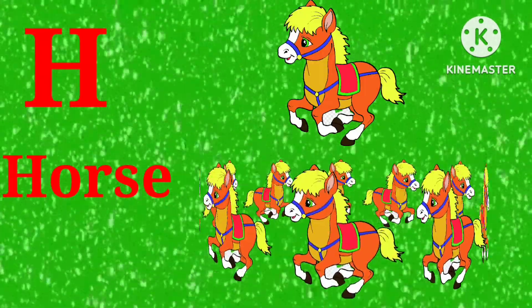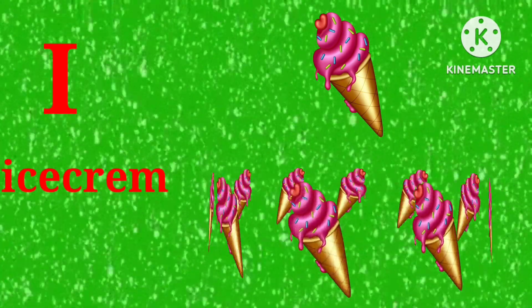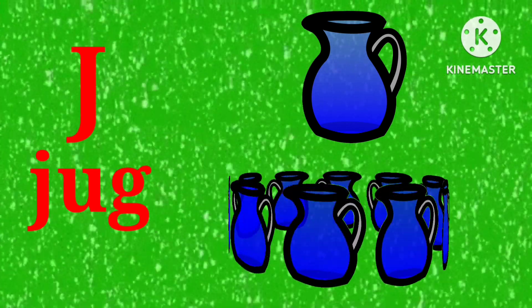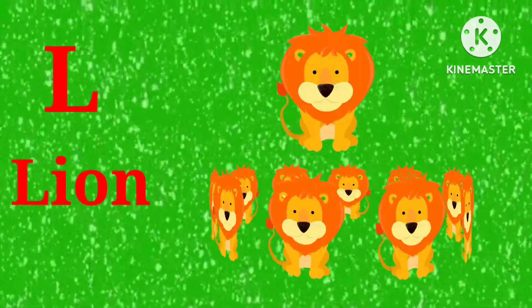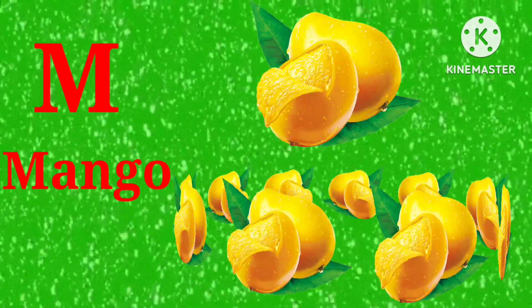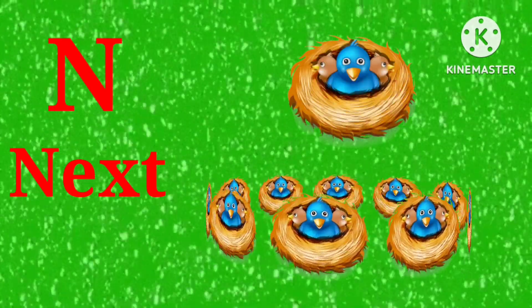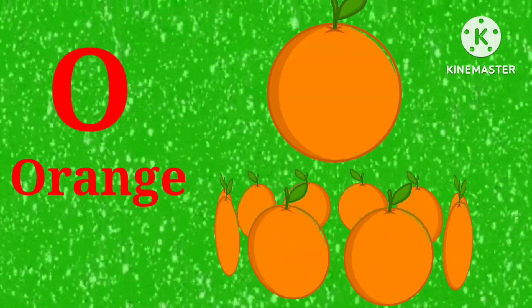H for horse, I for ice cream, J for jug, K for kite, L for lion, M for mango, N for nest, O for orange.